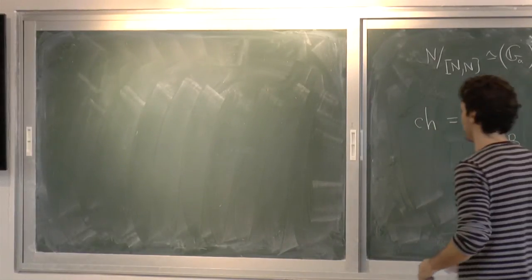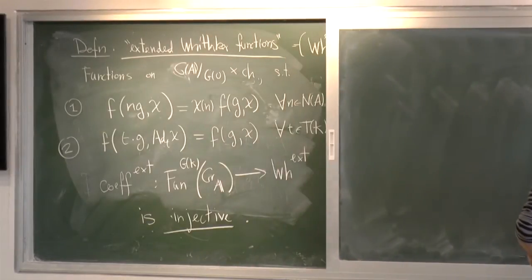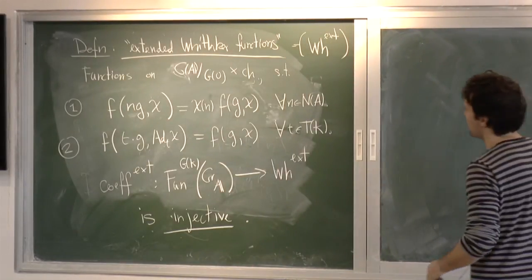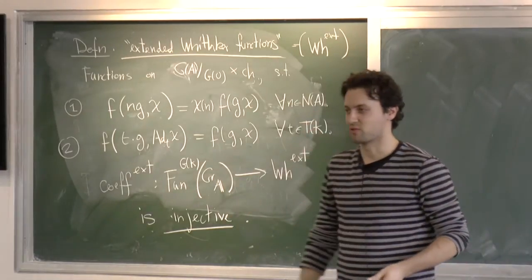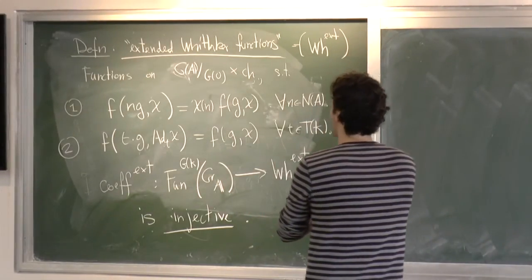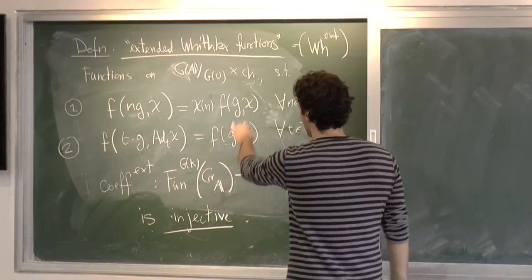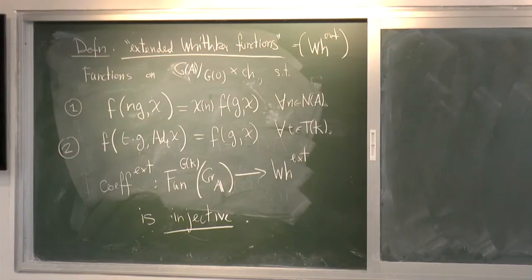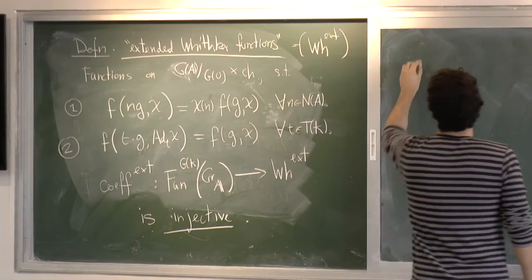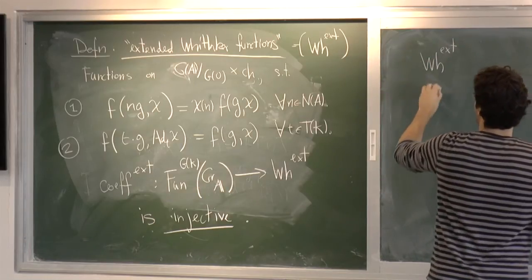And so define what's now its Whittaker, space of Whittaker functions with G of P to be functions on N of A chi_P invariant on this space. And now I need the center of the Levi of P.